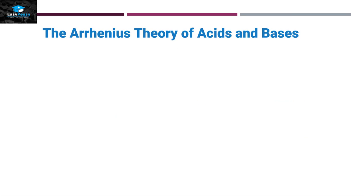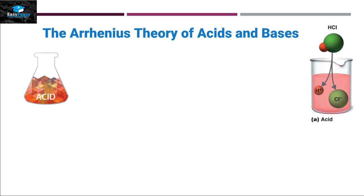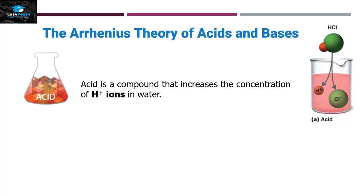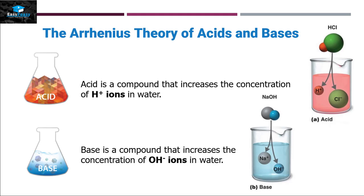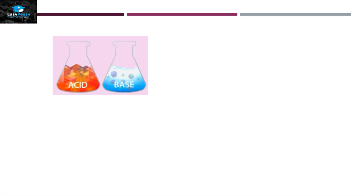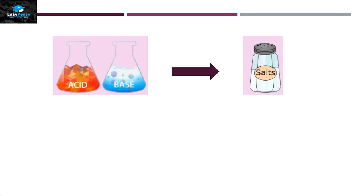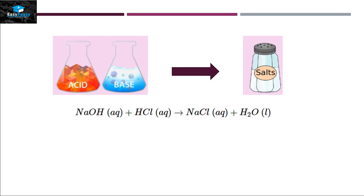According to Arrhenius, acids are compounds that increase the concentration of H⁺ ions in water, and bases are compounds that increase the concentration of OH⁻ ions in water. When acids react with bases they produce salt. For example, NaOH reacts with hydrochloric acid producing sodium chloride plus water. HCl is an acid because it releases H⁺ ions in aqueous solution.